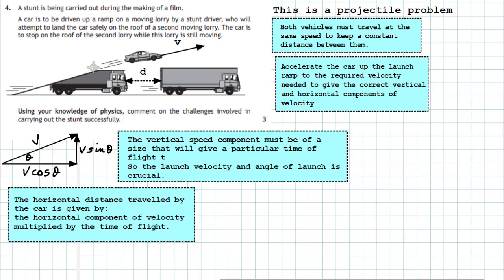So the horizontal component of velocity, which is given by the velocity of the car, and the time of flight in the air are crucial if that car has got to cross that gap of d which you can see in the diagram.